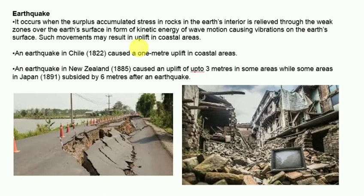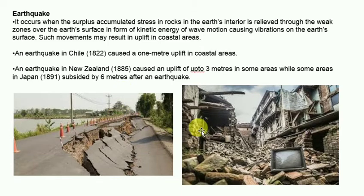Earthquakes may also cause shoreline changes, spectacular glacial surges as in Alaska, landslides, soil creep, and mass wasting. An earthquake in Chile caused a one-meter uplift in coastal areas; one in New Zealand in 1885 caused uplift of up to 33 meters, while areas in Japan in 1891 subsided by six meters after an earthquake.